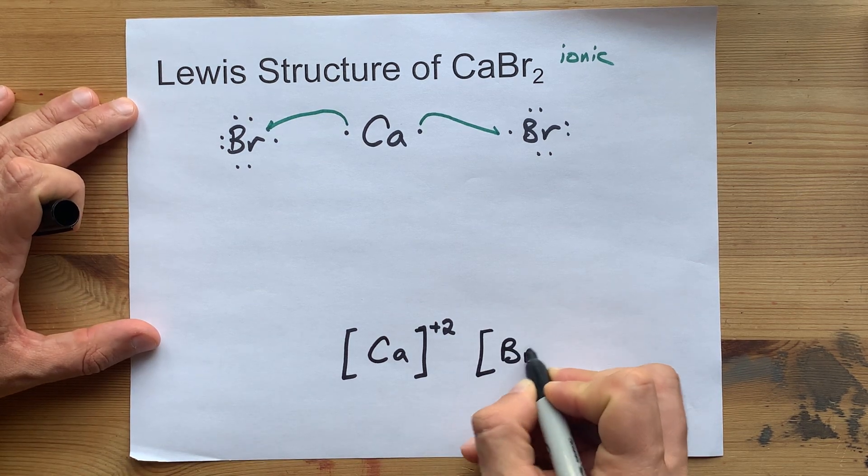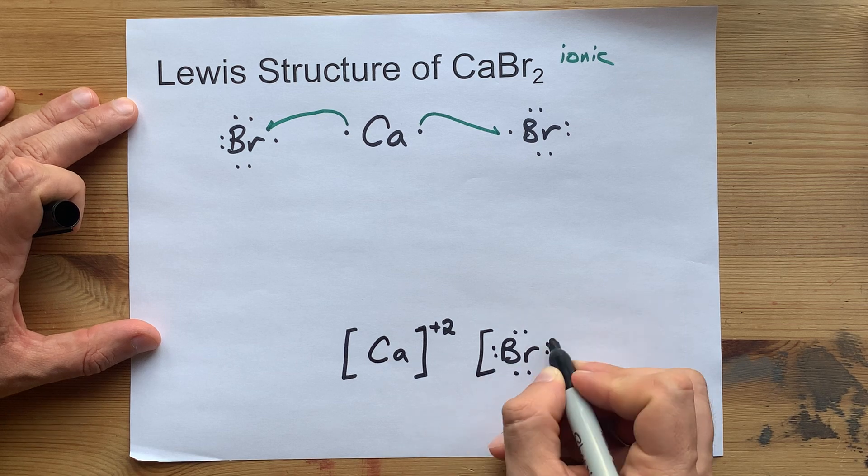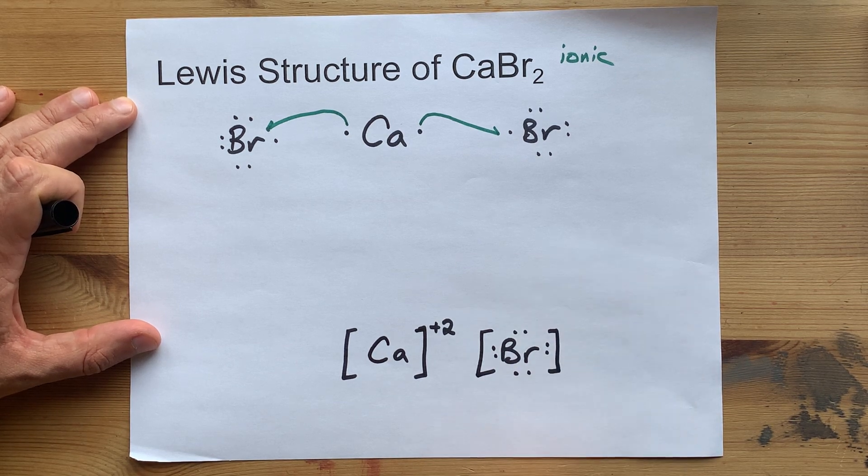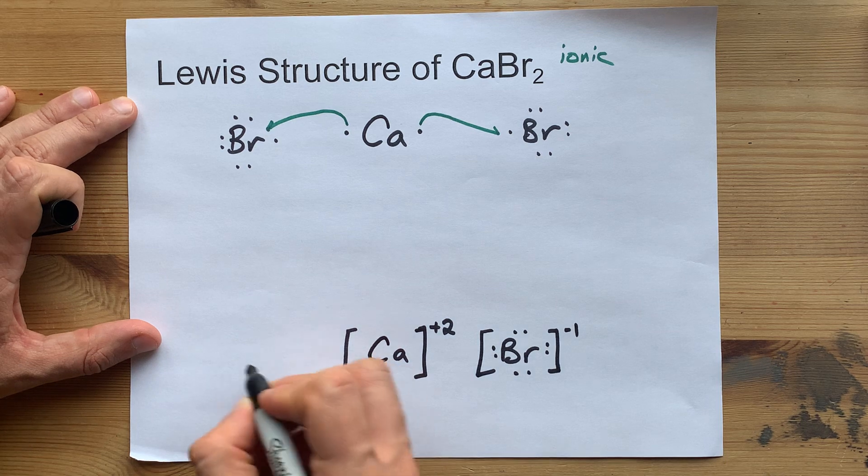Likewise, bromine now has eight electrons each, one more than the seven it started with, so it now has a minus one charge.